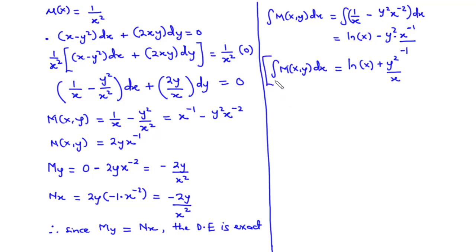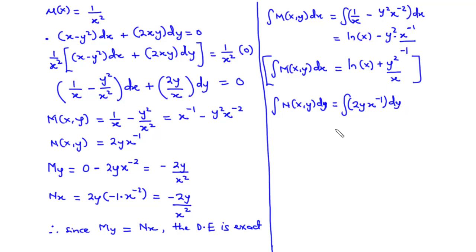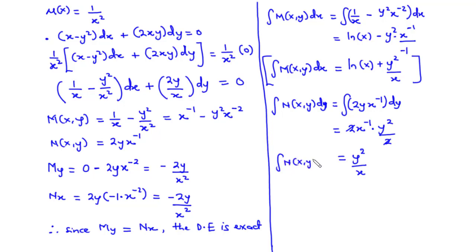Next, we integrate N with respect to y: ∫(2y·x^(−1))dy = 2x^(−1)·(y²/2) = y²/x. So the integral of N(x,y) with respect to y equals y²/x. We ignore the arbitrary constant of integration at this stage.